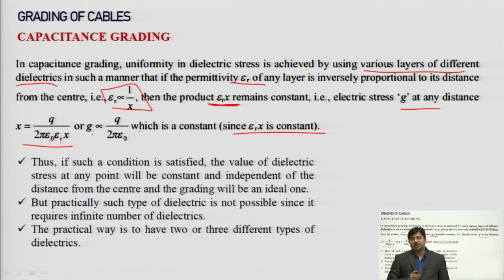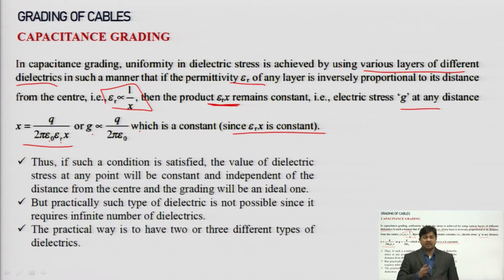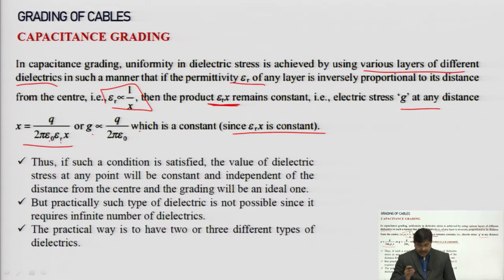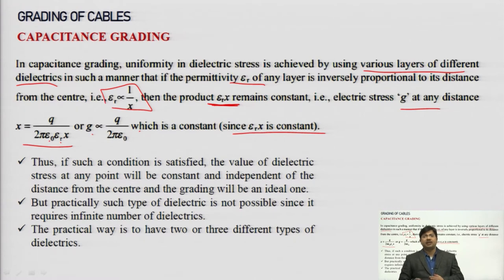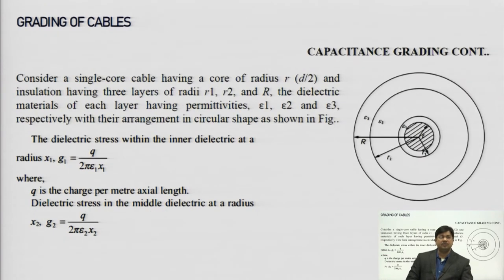But practically, this method is not easy to implement because we need multiple types of dielectric material, and we must ensure that all insulating materials have almost the same dielectric strength, the same thermal coefficient (temperature-bearing capacity), and sufficiently high mechanical strength. Ensuring all these properties match across a variety of insulating materials is complex. That is why practically only 2 or 3 different types of dielectric are used.